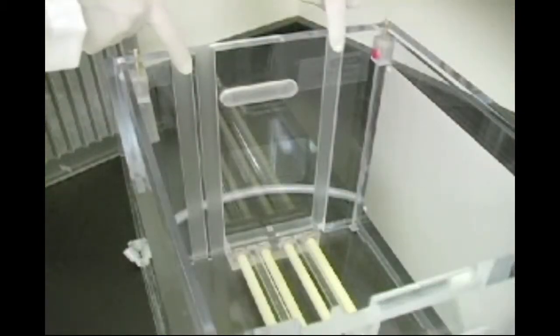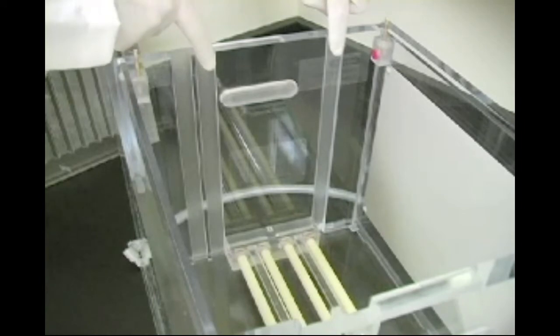There are two configurations for the gasket assemblies. The outer grooves are used for longer plates, such as the Protean Plus precast or handcast gels, while the inner grooves are used for shorter plates, such as the Protean 2 precast or handcast gels.